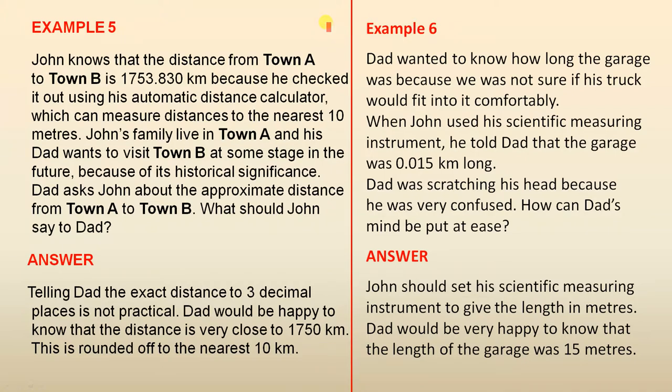Dad asks John about the approximate distance from Town A to Town B. What should John say to Dad? Answer. Telling Dad the exact distance to three decimal places is not practical. Dad would be happy to know that the distance is very close to 1,750 kilometres. This is rounded off to the nearest 10 kilometres.